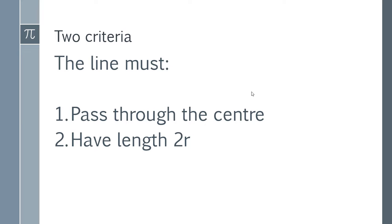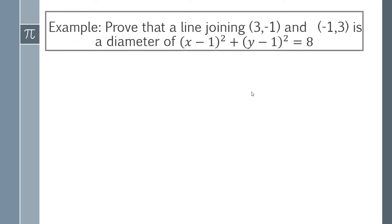So if you can prove those two things you have proved that your line is a diameter. If you prove either of these wrong then it can't be a diameter. So let's look at a worked example. We're going to prove that a line joining these two points is a diameter of the circle with this equation here.